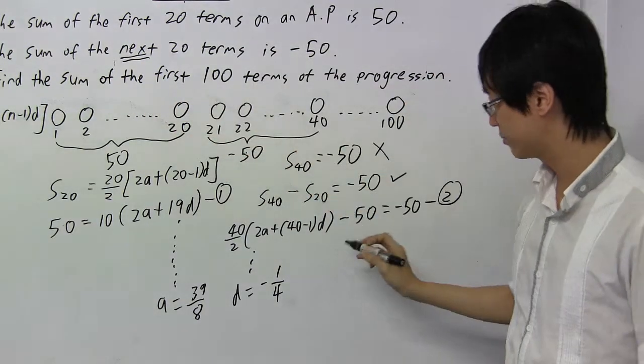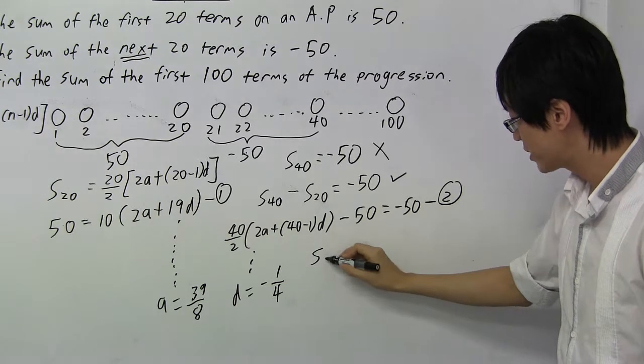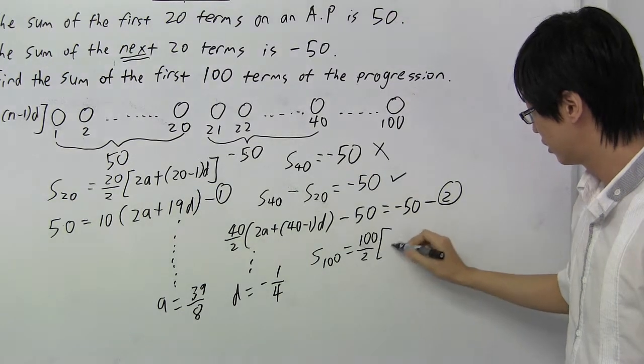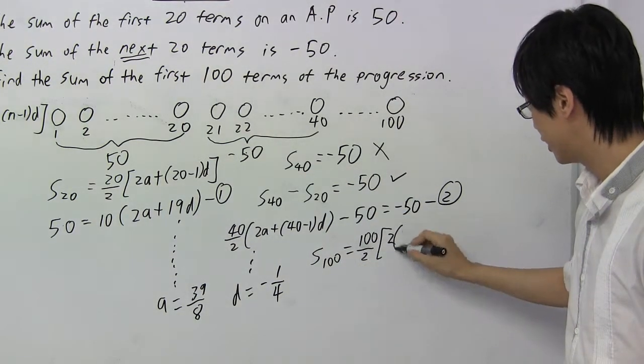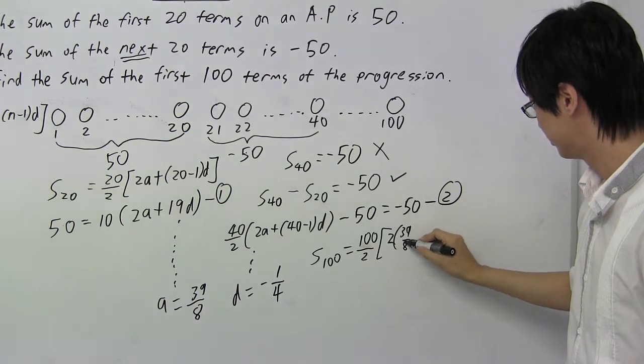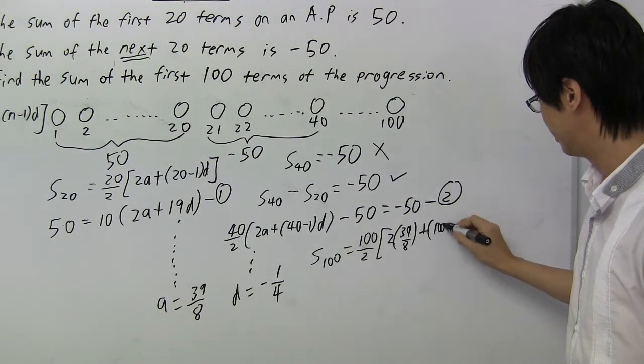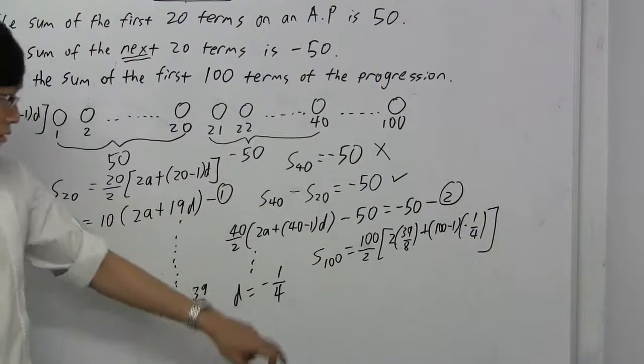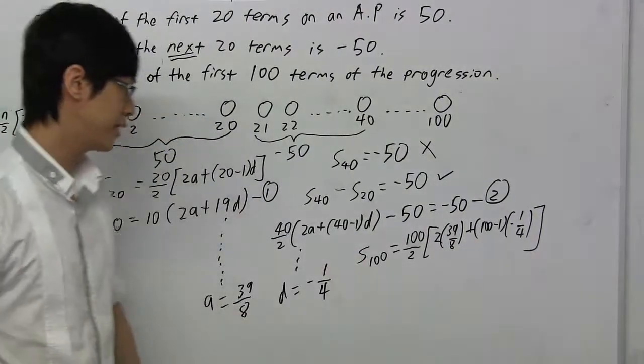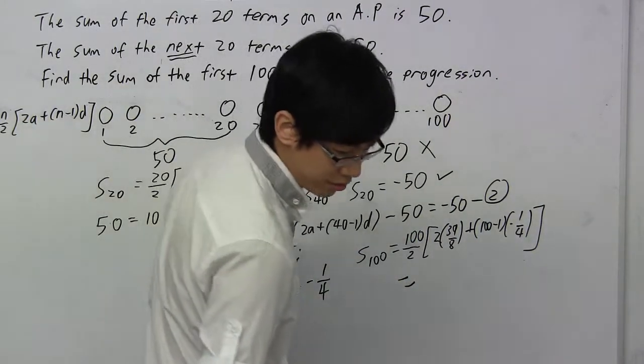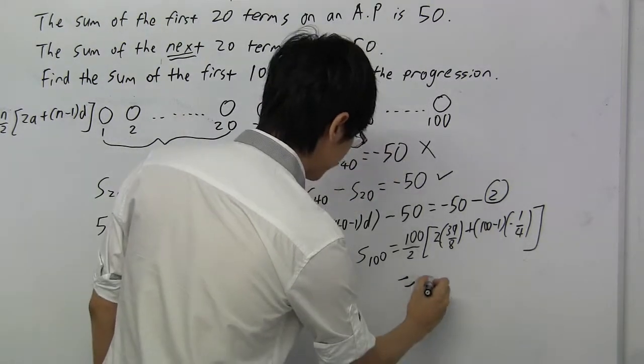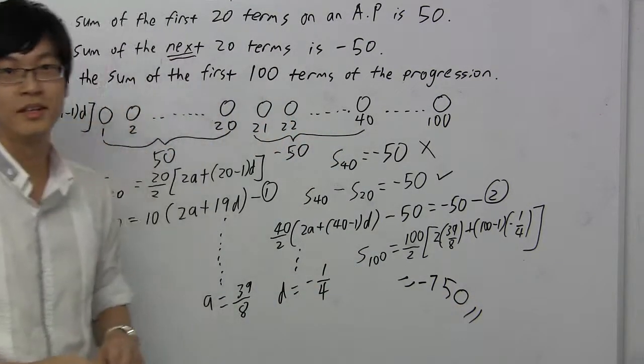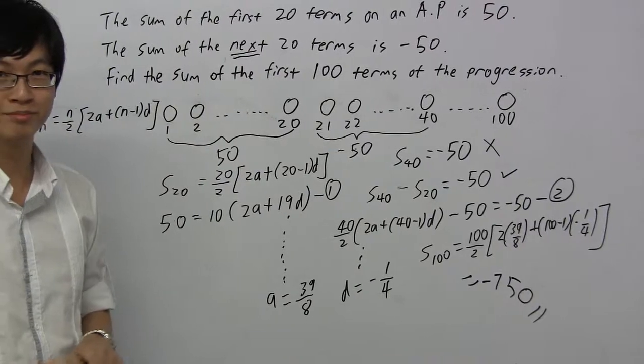They ask you to find the first 100 terms. And so S100 is what you need to find, right? So you get 100 over 2, 2A, A is 39 over 8, plus 100 minus 1D. So I just sub in the values. And after subbing the values, you will get minus 750. And that's it. So this is how you solve this AP question. Thank you.